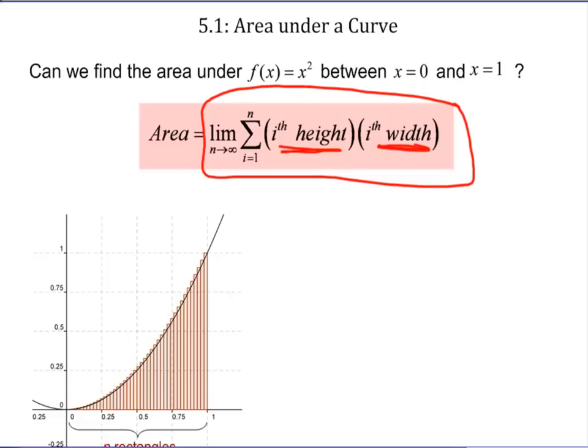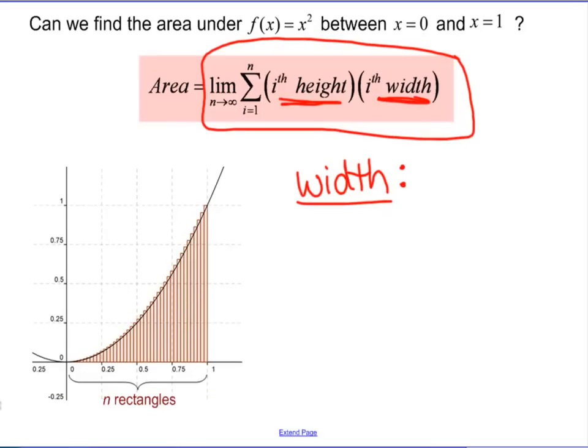We need actual formulas here. We'll start with the width. That's not too bad. They're all the same. In this particular example, how wide are the rectangles going to be? So you're going from 0 to 1. How long is the distance from 0 to 1? 1. You're going to take 1 and split it up into how many pieces? n. So the width of each rectangle should be 1 over n.